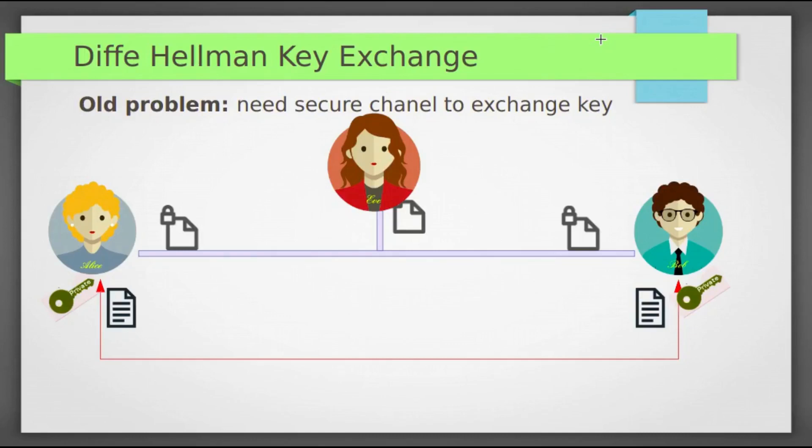In last class we have seen RSA encryption algorithm. Today we will discuss Diffie-Hellman key exchange. See this, this is the symmetric key system. What is the main problem with this system? Alice and Bob need secure channel, this secure channel to exchange key securely because they both need same key.